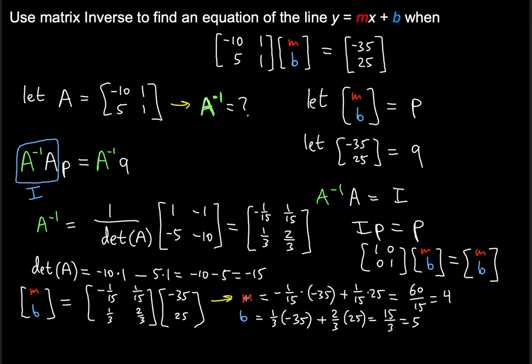Now we found the equation of the line, m and b. The equation is y equals 4x plus 5. You've successfully found the equation of a line by using matrix inverses.